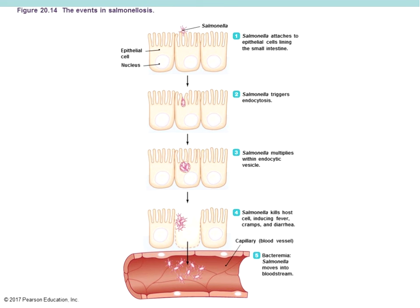Here is a diagram showing the course of Salmonellosis: the Salmonella, which has flagella all around it, attaches to the lining of the intestines — the epithelial cells — triggering the cell to endocytize it. Instead of merging with a lysosome to become a phagolysosome complex and breaking down the Salmonella, it kills the host cell, leading to fever, diarrhea, and cramps. It can then make its way into the bloodstream after replicating inside the host cell.